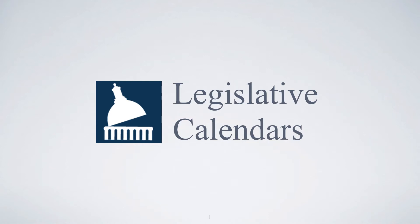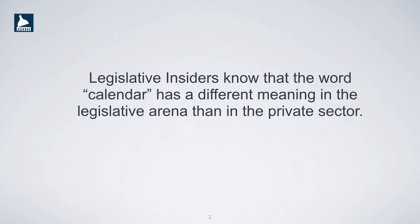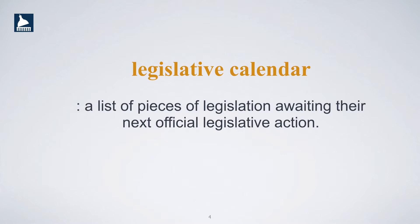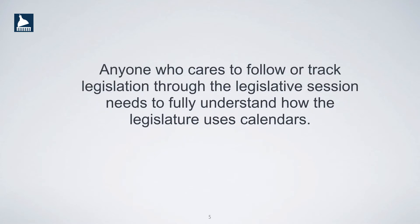Welcome to Legislative Calendars. Legislative insiders know that the word calendar has a different meaning in the legislative arena than in the private sector. Most often we think of a calendar as a chart showing days, weeks, and months of the year. In the legislature, the word calendar takes on an entirely different meaning. Legislative calendars are actually lists of legislation awaiting their next official legislative action. Anyone who cares to follow or track legislation through the legislative session needs to fully understand how the legislature uses calendars.